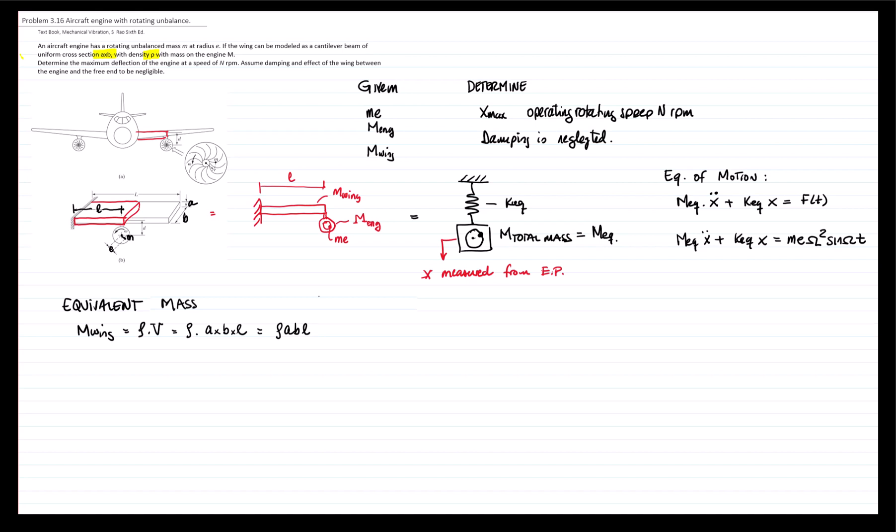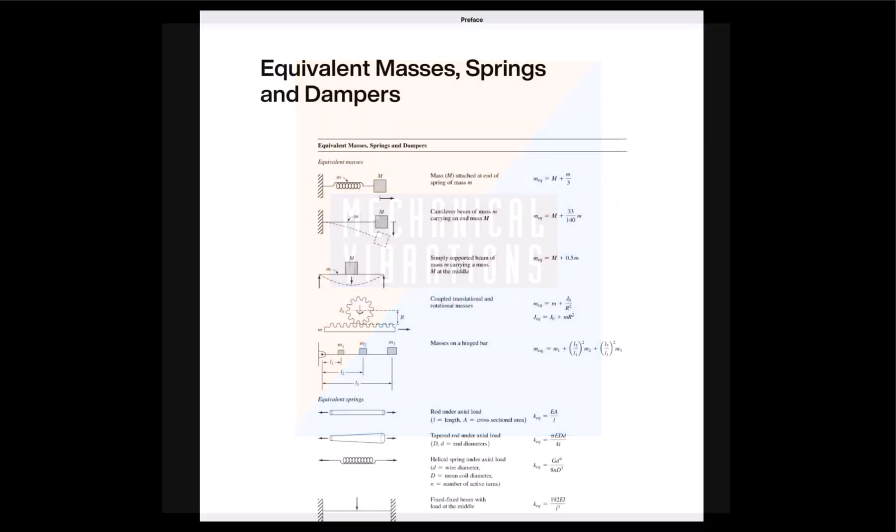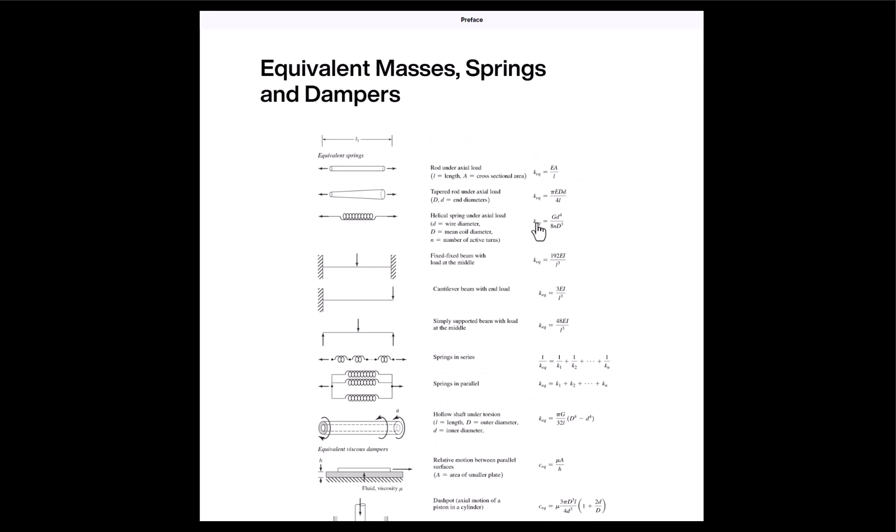However, the wing is also the spring because it has flexibility. Therefore, we have to use the formula that is for a cantilever beam with mass. If we go to our mechanical vibration book and we look for the table of equivalent mass, spring, and damper, this is the formula that we will be using, which is the cantilever beam with mass.